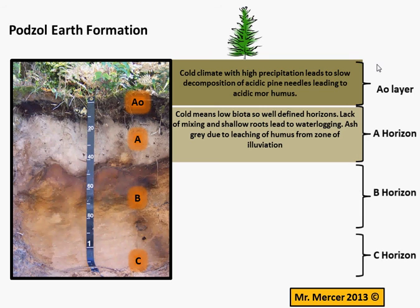That takes us on to the A horizon. It's cold, and that means there's not going to be very many worms or other biota in the soil, meaning there's a lack of bioturbation, and so the horizons are well defined. This lack of mixing leads to a poorly aerated soil. It'll be fine-grained and quite dense in texture.